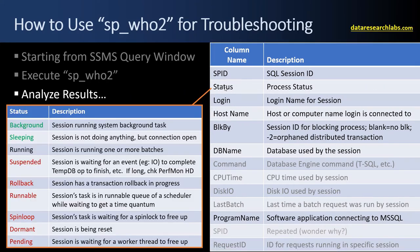Circling back to the process status values: green is good, no impact. Black means it's busy running. All the red statuses mean maybe there's something up. A background status most likely means the SA account or user is running some system background task — these are usually SPIDs 1 through 50, so I just ignore SPIDs 1 through 50. Sleeping statuses are typically users whose connection is open but they haven't run anything for 30 minutes, an hour, or two hours. As long as you don't have thousands of them, it's probably no big deal. A running session is busy running one or more batches.